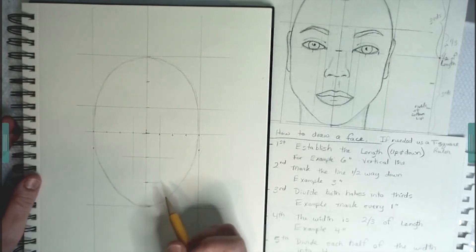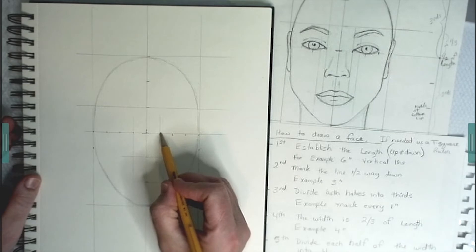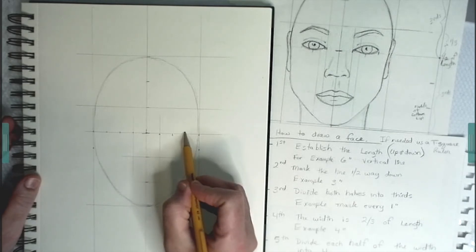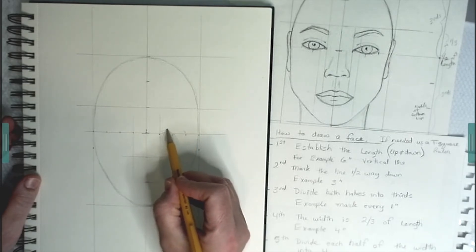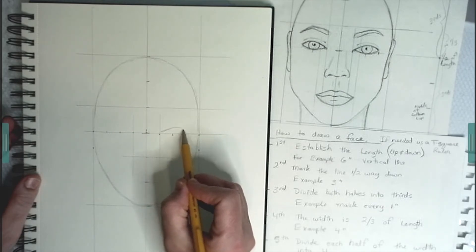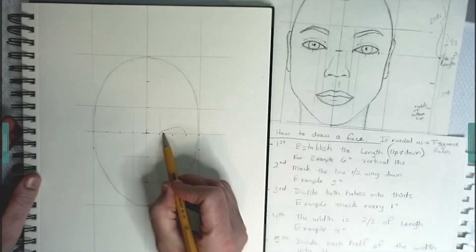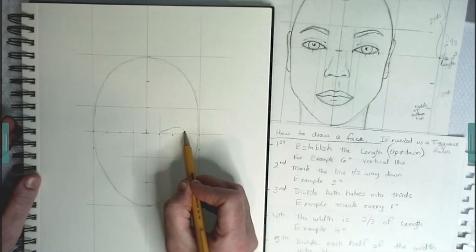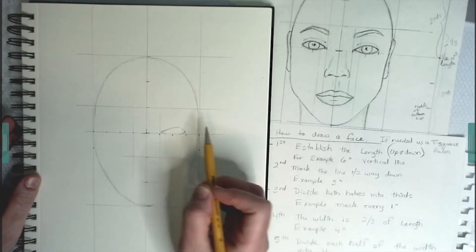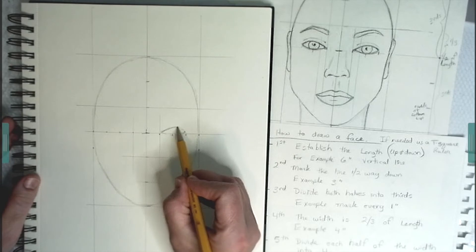So now I like to start drawing the eye. And the eye is two fourths of half of the face. Some people like to draw it directly on that line. I like to go a little above that line.